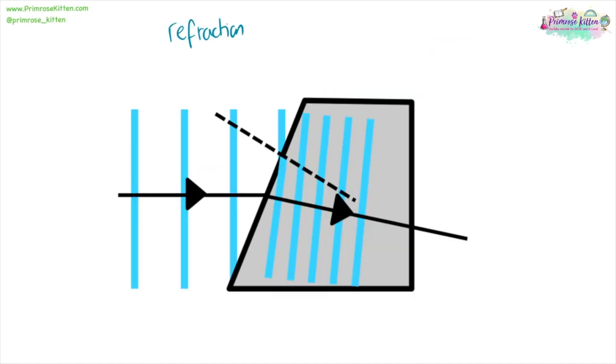Refraction happens when a wave passes from one medium into another medium. Say from air into glass or air into water. And it will change direction. So here is our normal here, move it down to here. It will change direction as it goes through there. And the reason it changes direction is because the wave changes speed.